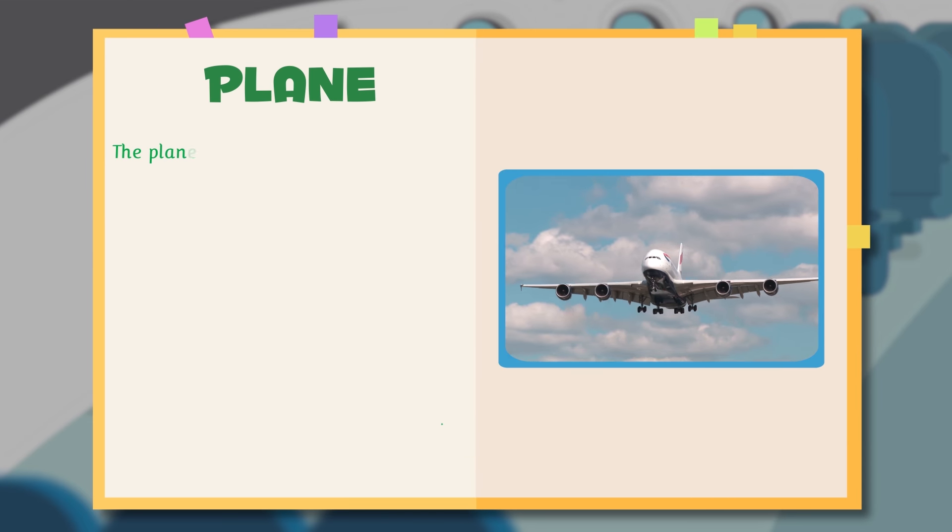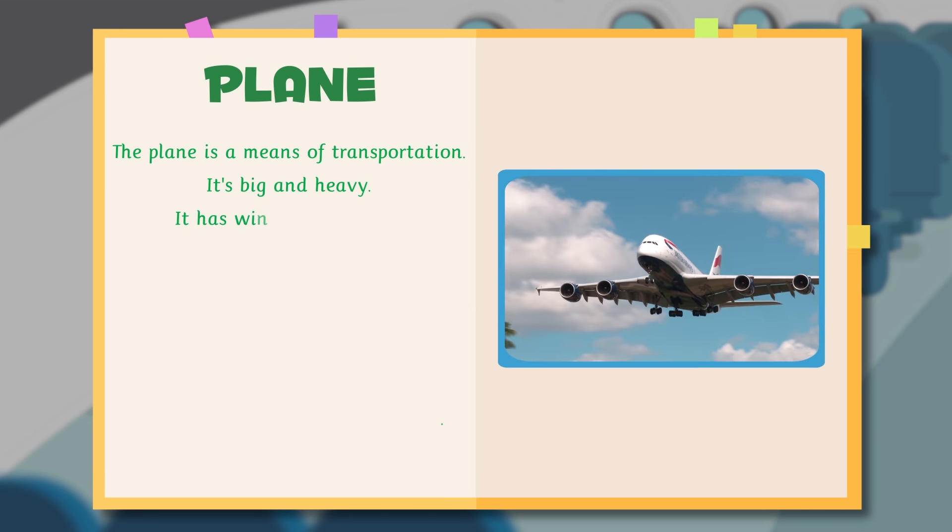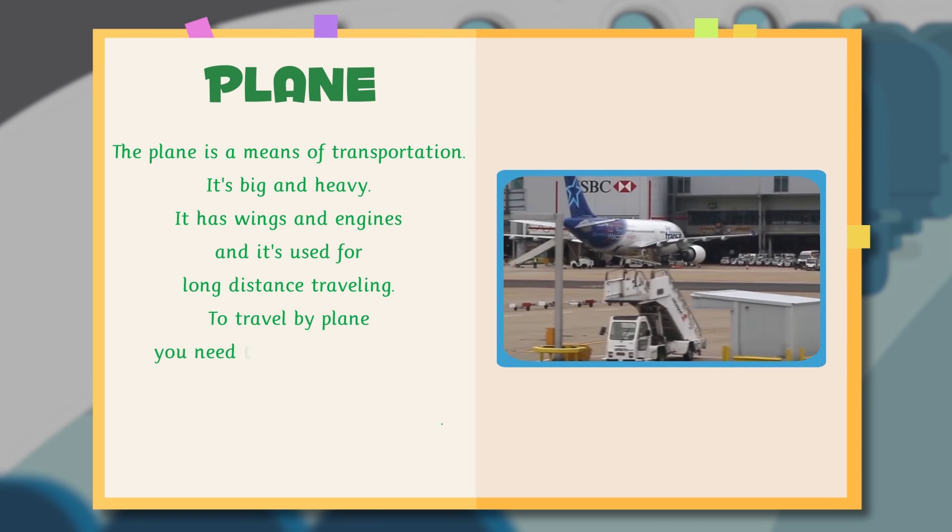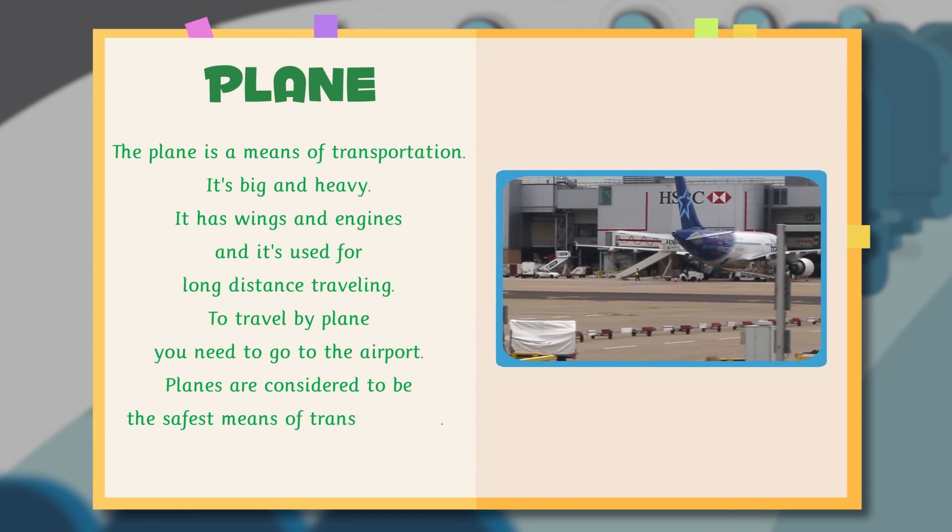The plane is a means of transportation. It's big and heavy. It has wings and engines and it's used for long distance traveling. To travel by plane, you need to go to the airport. Planes are considered to be the safest means of transportation.